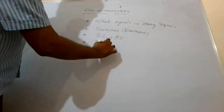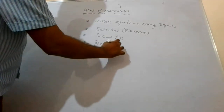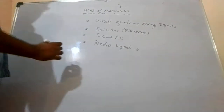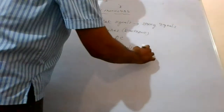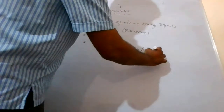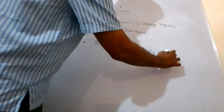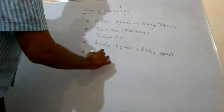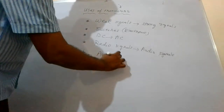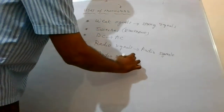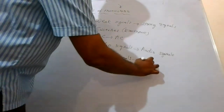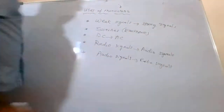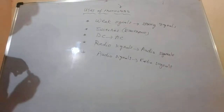Transistors also convert radio signals to audio signals and vice versa — they convert audio signals to radio signals. These are the uses of transistors.